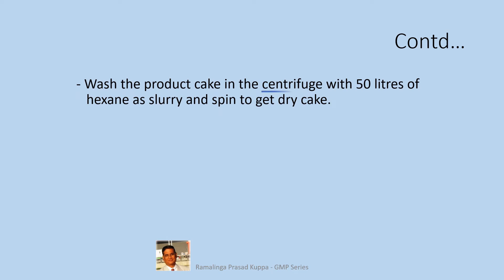Wash the product cake in the centrifuge with 50 liters of hexane as slurry and spin to get a dry cake. In this step, there is a risk from the highly flammable solvent hexane. While making a slurry, you need a spade to dismantle the cake and make a slurry with hexane. The risk assessment should include the type of spade used for re-racking the cake. If you use a stainless steel spade, there is a potential risk of electrical charge generating a spark. Hexane being a highly flammable solvent, it can catch fire. As a mitigation plan, a PTFE or PP spade is selected for the purpose, and necessary earthing of the centrifuge is required to neutralize electrical charges. The centrifuge must be effectively earthed to ensure neutralizing the potential charges that could generate in high-speed centrifuges.